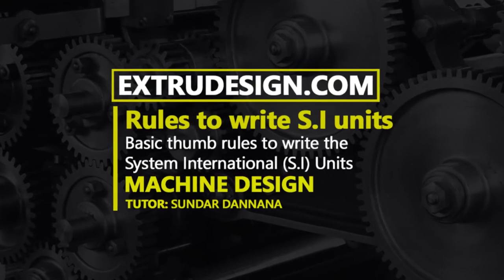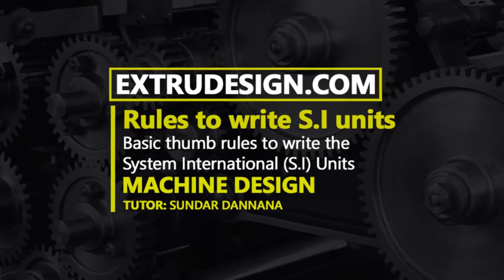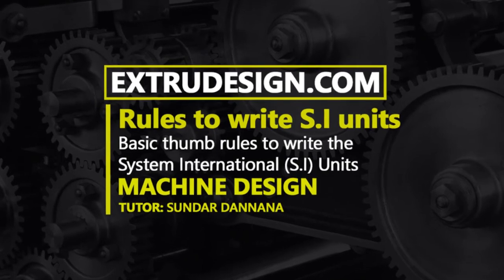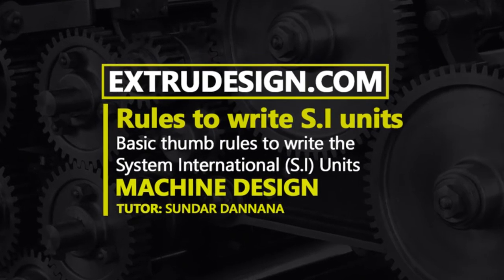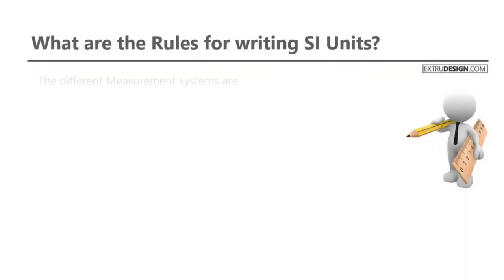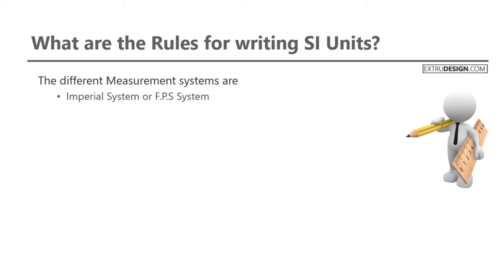Hey guys, welcome back to x2design.com. In this video we are going to discuss what are the different rules for writing SI units. We already know that there are three different measurement systems — the first one is the imperial system.